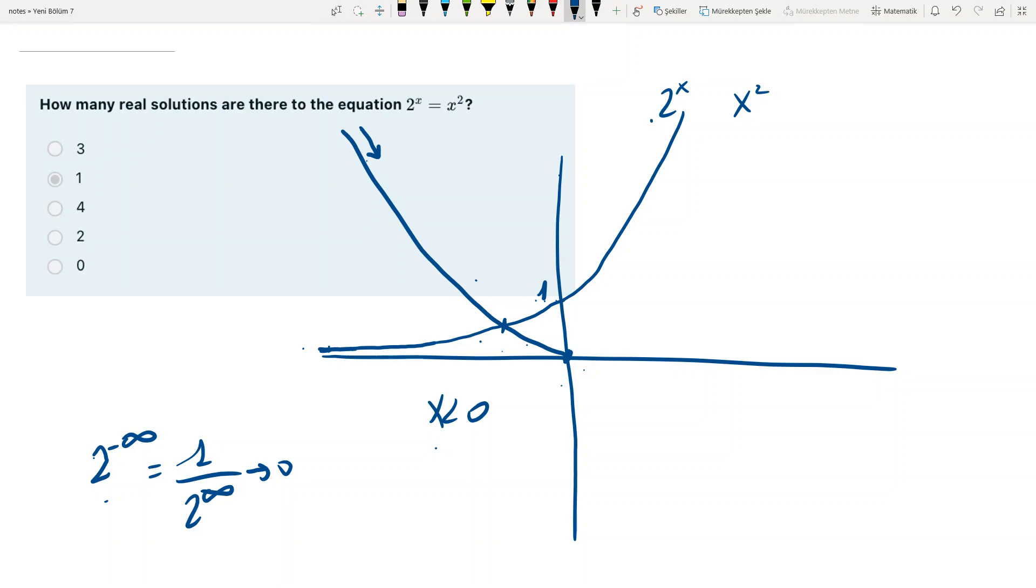What about when x is positive? So, this is where I'm going to offer an intuitive approach. Let's check some points. When x is 0, as you can see, 2 to the x is 1, x squared is 0, and 2 to the x is greater.